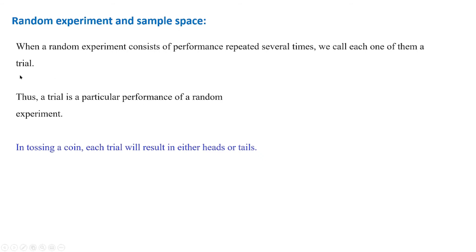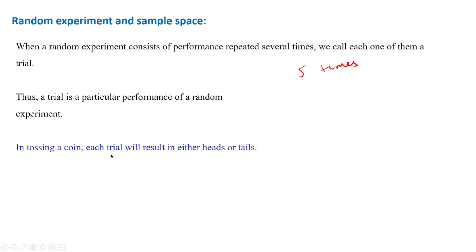Now, coming to what is known as a trial. When a random experiment consists of a performance which is repeated several times, then we call each one of them a trial. If we toss a coin say 5 times, then each time we toss the coin it is called a trial. Thus, a trial is a particular performance of a random experiment. In tossing a coin, each trial will result in either head or tail. We have now understood random experiment, sample space, and the meaning of trial.